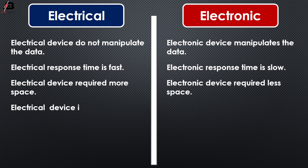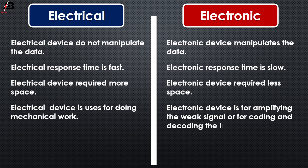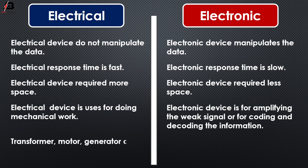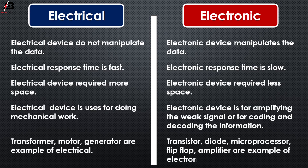Electrical devices are used for doing mechanical work. Electronics devices are used for amplifying weak signals or for coding and decoding information. Transformer, motor, and generator are examples of electrical devices. Transistor, diode, microprocessor, flip-flop, and amplifier are examples of electronic devices.